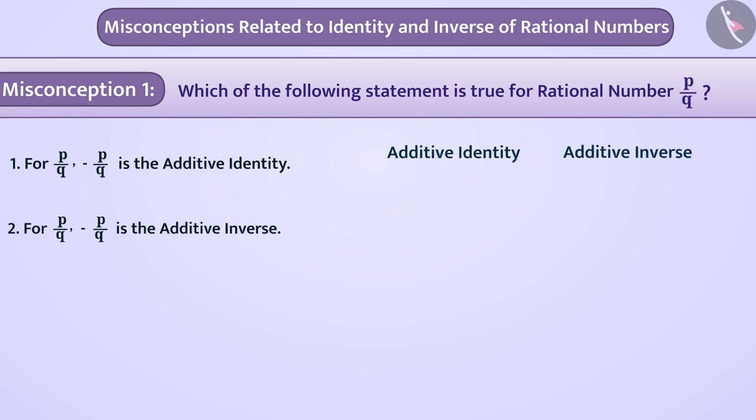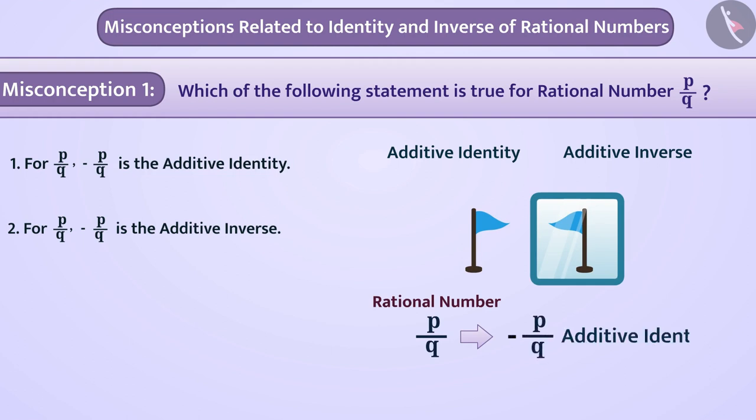They think that, just like an object looks in a mirror, the same applies to the rational number P by Q. Minus P by Q is the additive identity of P by Q. Therefore, they give answer as option 1, which is wrong.